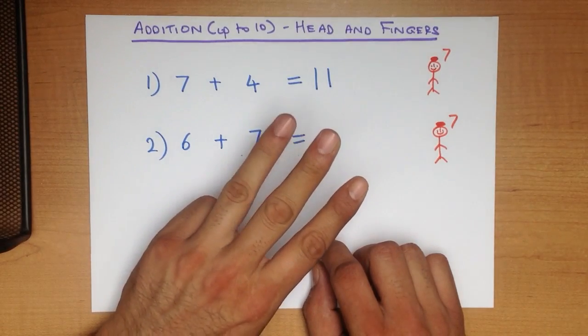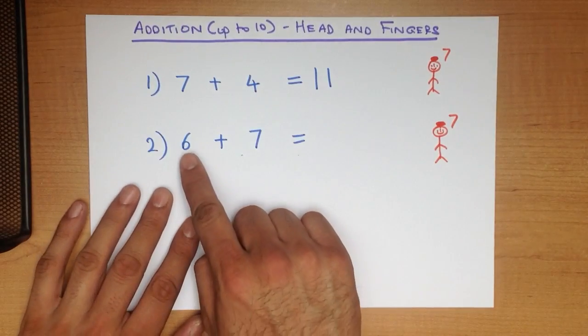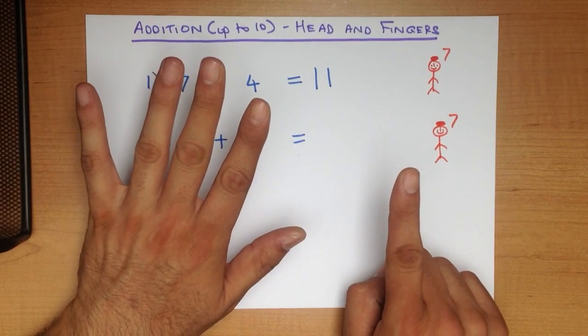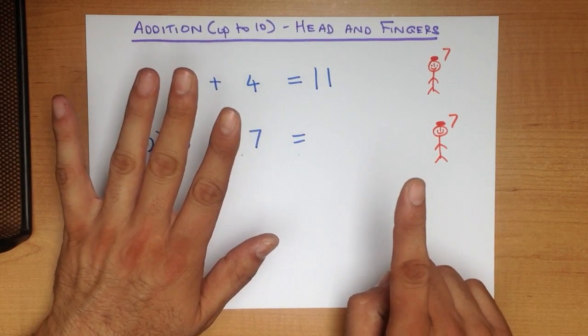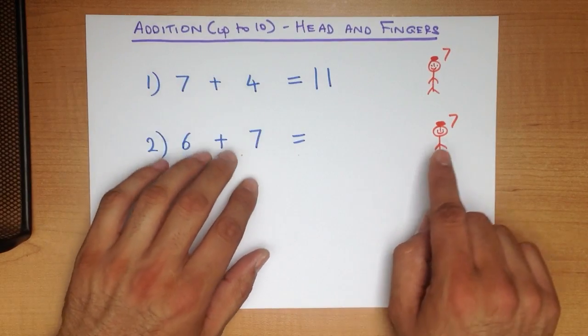1, 2, 3, 4, 5, 6. That is the 6. So there is 7 on my head and 6 in my hand. Now we just count from 7 how many fingers we have.